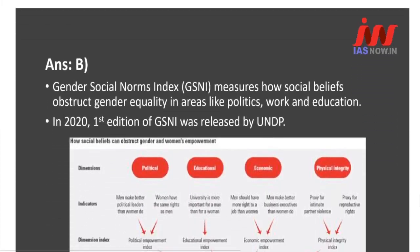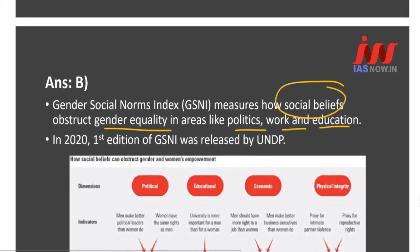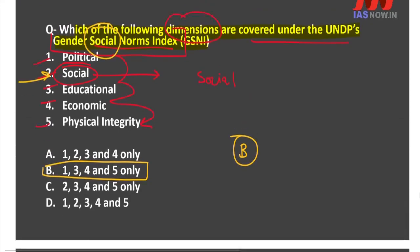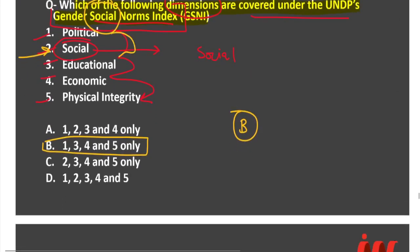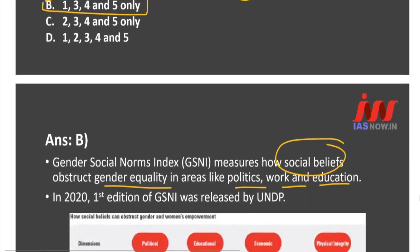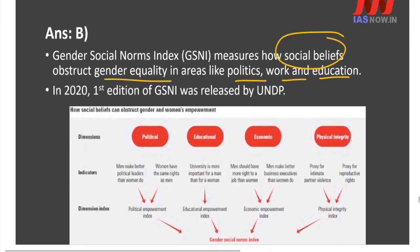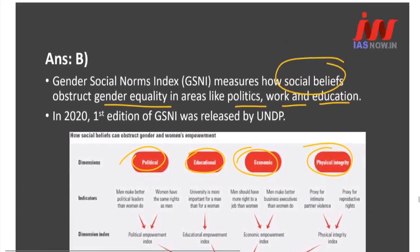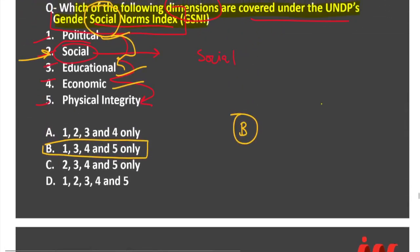The Gender Social Norms Index measures how social beliefs obstruct gender equality in areas like politics, work, and education. It is confusing because the index is named 'Gender Social Norms,' but 'Social' is not a dimension itself. It covers Political, Educational, Economic, and Physical Integrity as its four dimensions. The correct option is B.